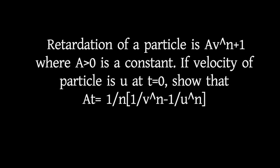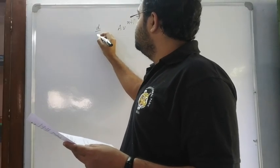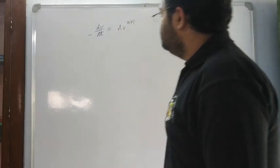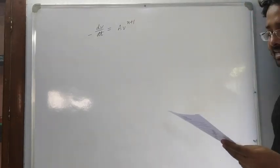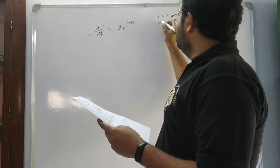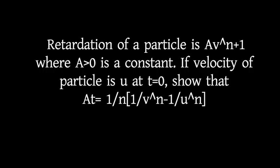The retardation of a particle is a v to the power n plus 1. If the velocity of the particle is u at t equal to 0, show that at time t, the expression equals 1 by n plus 1 times 1 by v to the power n minus 1 by u to the power n.